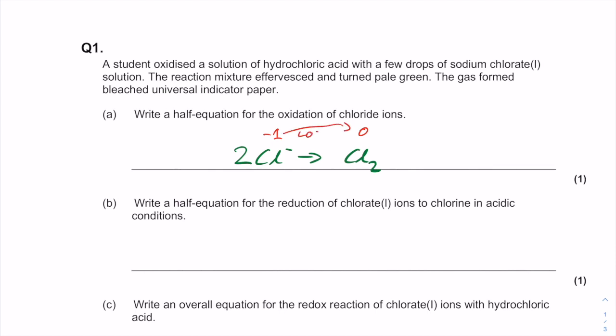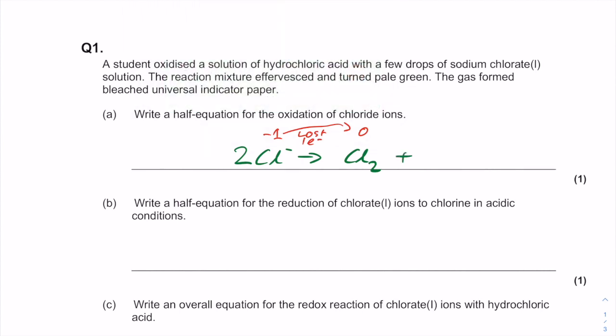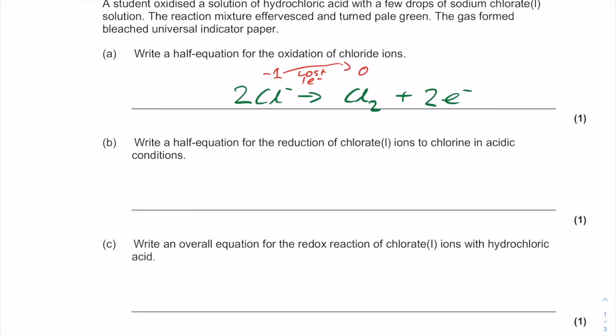So in this situation we've been oxidized, we've lost one electron. So that losing of one electron is going to go on to this side. But of course we've got two chlorine atoms, so we're going to stick a 2 in front of here, so it's 2 electrons.